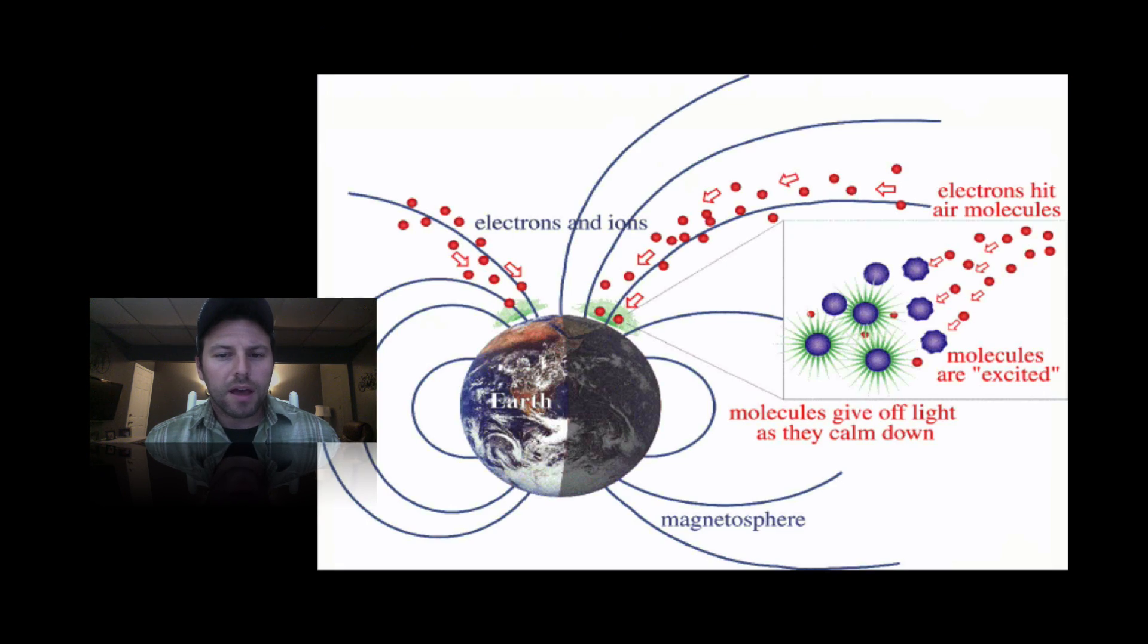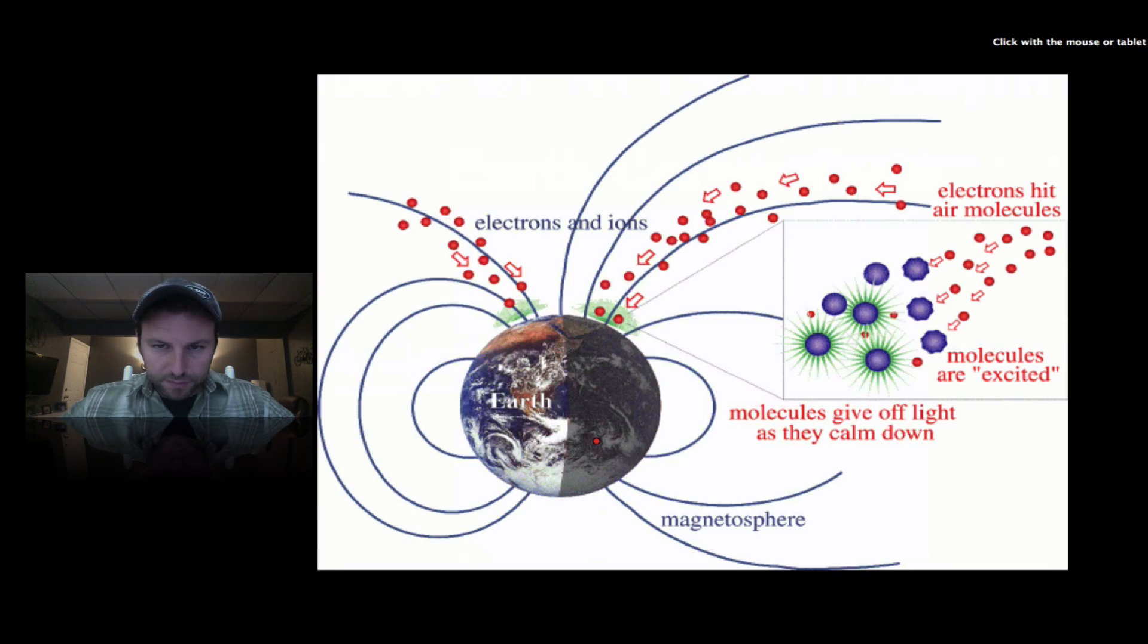Here it is. So we have the electrons hit air molecules. So this is all that energy and matter pouring out from the sun. The electrons, the ions right here, they interact. So the molecules are excited and they give off light as they calm down. Like I said, this is a nice little diagram to have down. We're going to go over it in more detail in class.